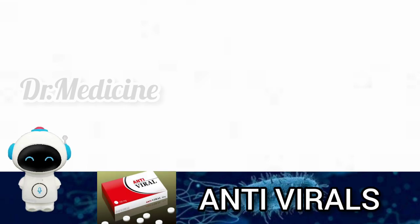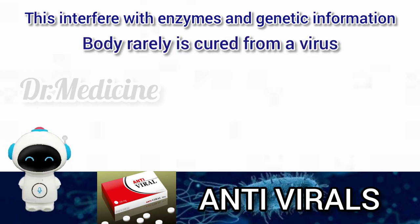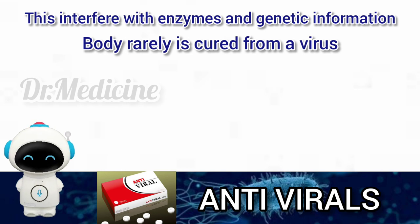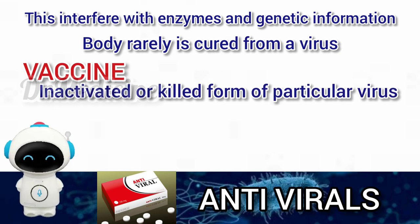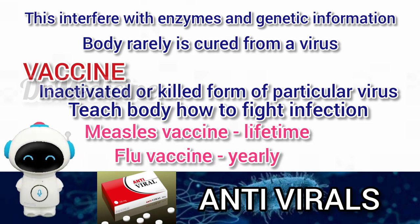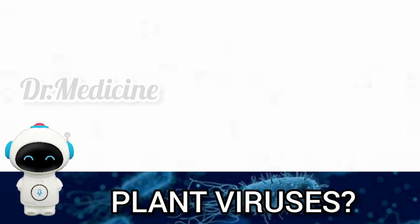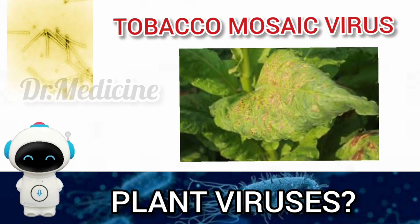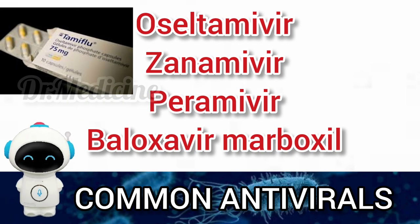Viral infections are treated by antiviral drugs, which may interfere with enzymes and genetic information. However, the body is rarely fully cured of a virus, as the drugs can kill host cells as well. Vaccinations may contain the inactivated or killed form of a particular virus and teach the body how to fight infection when encountered again. For example, the measles vaccine confers immunity for life, while the flu vaccine must be taken every year. There are also plant viruses like tobacco mosaic virus, typically spread by leaf-eating insects. Some common antiviral drugs include oseltamivir, zanamivir, peramivir, and baloxavir marboxil.